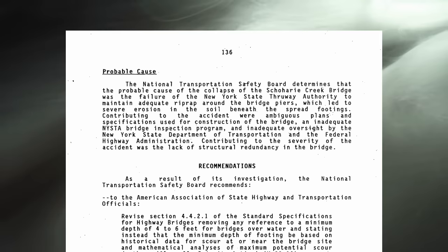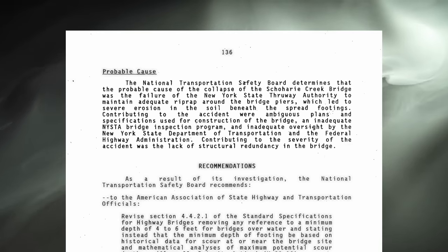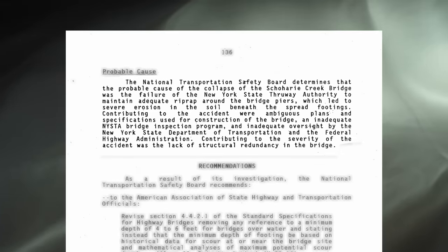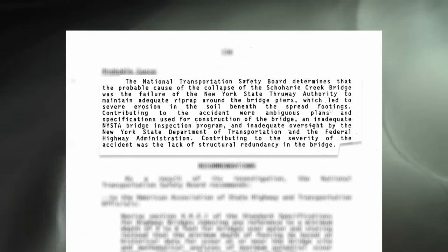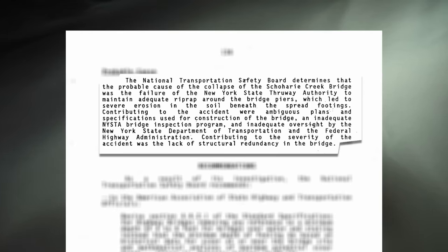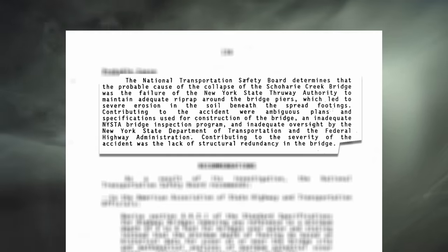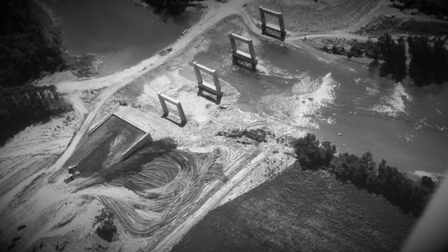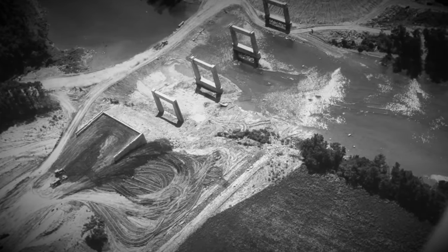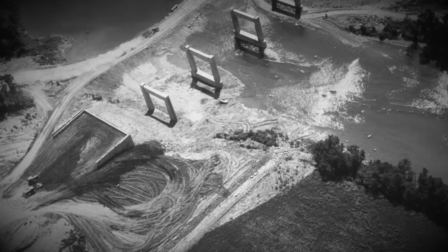The National Transportation Safety Board determined that the probable cause of the collapse was the failure of the New York State Freeway Authority to maintain adequate rip-rap around the bridge's piers, which led to severe erosion in the soil beneath the spread footings. Contributing factors included ambiguous plans and specifications used for construction, an inadequate NYSTA bridge inspection program, and inadequate oversight by the New York State Department of Transport and the Federal Highway Administration. Contributing to the severity was a lack of structural redundancy. From the day the bridge was built, the countdown to disaster had already begun — a 35-year journey of the creek bed wearing away to ultimate failure.